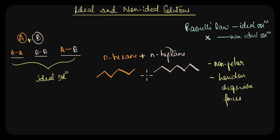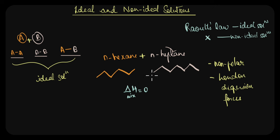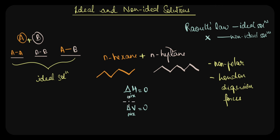This means that when we mix these two liquids together, the energy of the system does not change drastically. This is why for an ideal solution the enthalpy of mixing is zero — no heat is absorbed or released when the two components are mixed. Similarly, the volume of mixing is also zero; the volume of the solution is exactly equal to the sum of the volumes of the two components before mixing.